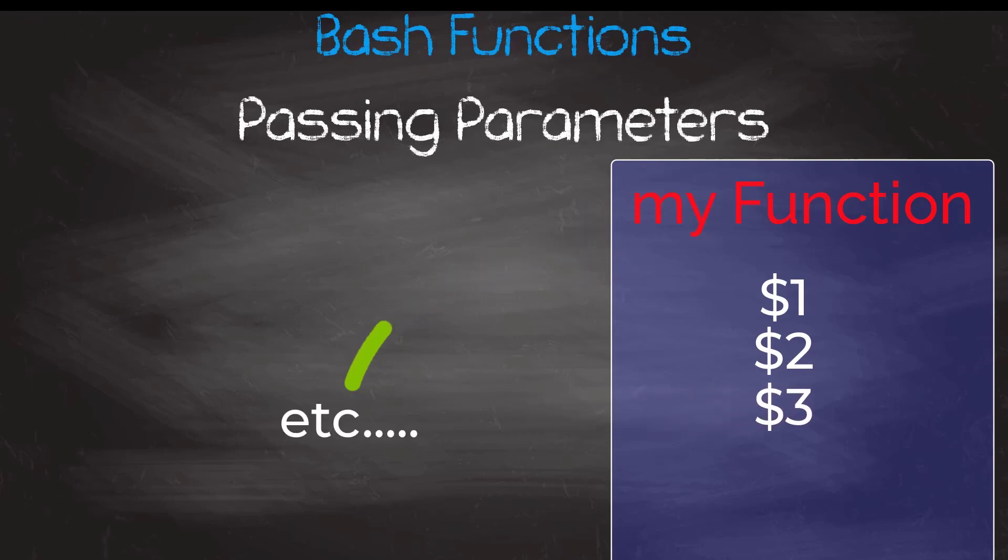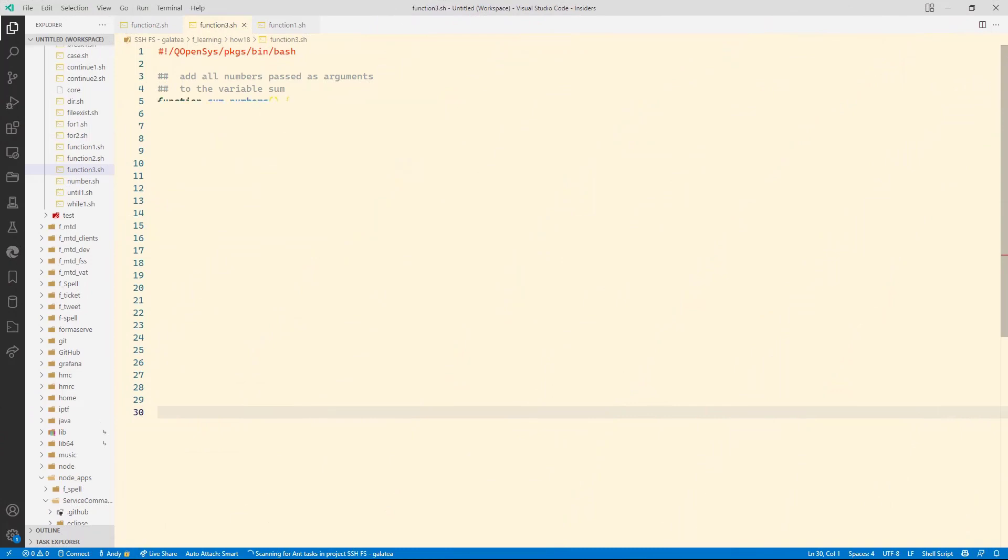In the function we use dollar sign 1, dollar sign 2, dollar sign 3, etc. for the order they are parsed into the calling of the function. In this example we will parse a few variables into a function and get that function to add them up. This function has to work whether we parse two variables or ten variable values into it. We will call this function sum underscore numbers as it's going to add the numbers passed to it.